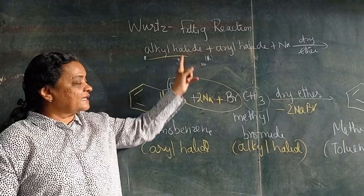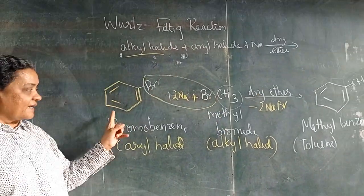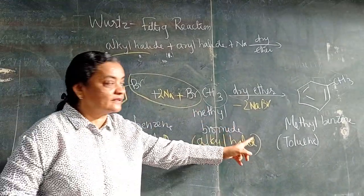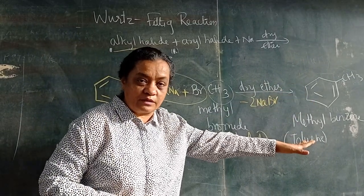Wurtz-Fittig. Wurtz ke liye alkyl halide, Fittig ke liye aryl halide, plus sodium in dry ether - you get methyl benzene or toluene.